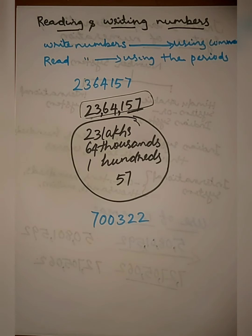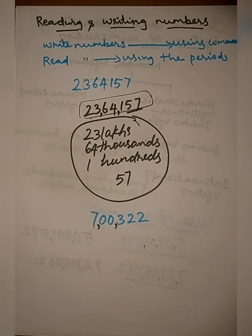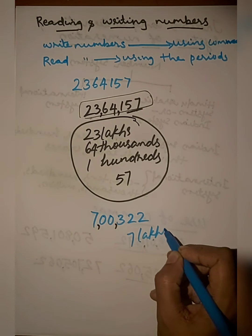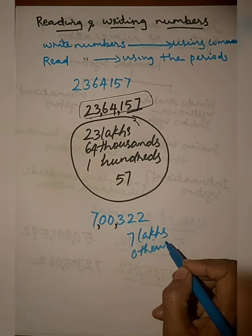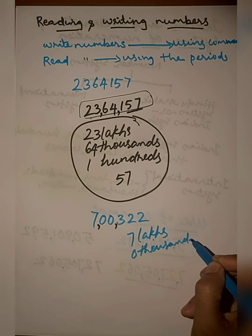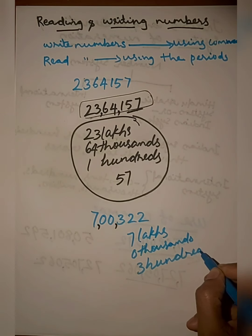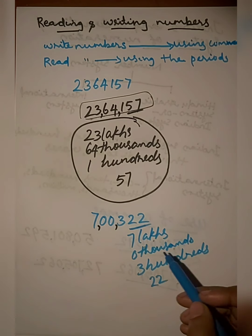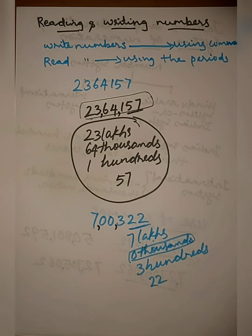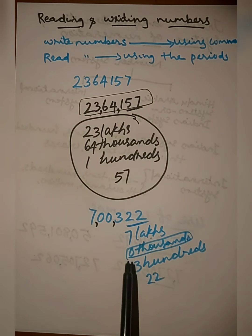Let's check the next example. We place the first comma and the second comma. How many lakhs? Here it is seven lakhs. How many thousands? Here it is zero thousand. How many hundreds? Here it is three hundreds. Tens and ones together: twenty-two. So the number name is: seven lakh three hundred twenty-two.